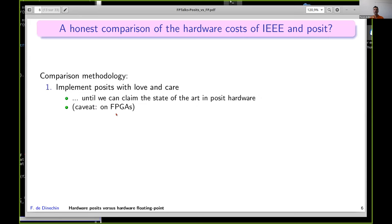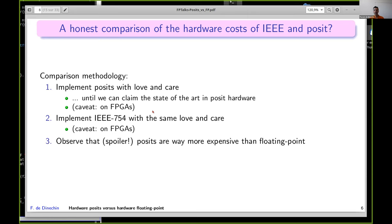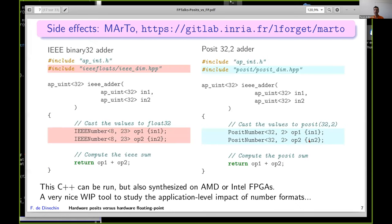Same effort, same tools. The methodology is simple. We first implement posits with love and care. The measure of success is that we can claim state of the art in terms of efficiency for posit hardware. One caveat: we only work on FPGAs because we are poor, so there's no ASIC results in this talk. Then we implement IEEE 754 with all the bells and whistles and with the same love and care. We won't claim state of the art—that's probably in some chip from Apple, ARM, Intel, or AMD—but we make it with the same effort and tools, then compare the two. The spoiler is that posits are about twice as expensive as floating-point for the same size format. I'll draw a few conclusions that should hold even if you implement them in ASIC. One side effect of this work is this very nice library.